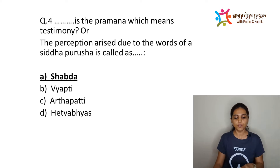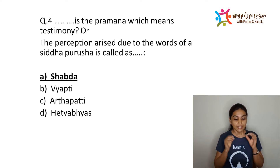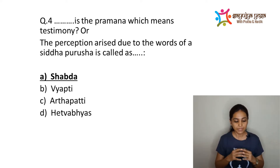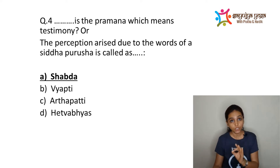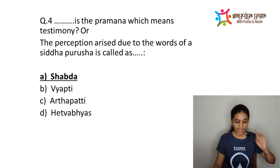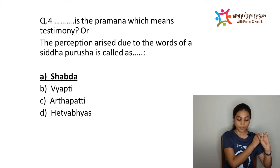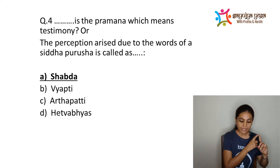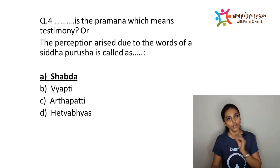In Shabda Pramana, we depend on what others say, but with one condition — the person must be Aapta. Aapta means Yatharta Vakta, the one who speaks the truth. An Aapta person must meet two conditions: they should have right knowledge themselves, and they should be able to impart that knowledge without any mistake. Therefore, verbal testimony of an Aapta person or a Siddha Purush is known as Shabda Pramana or Agam Pramana.